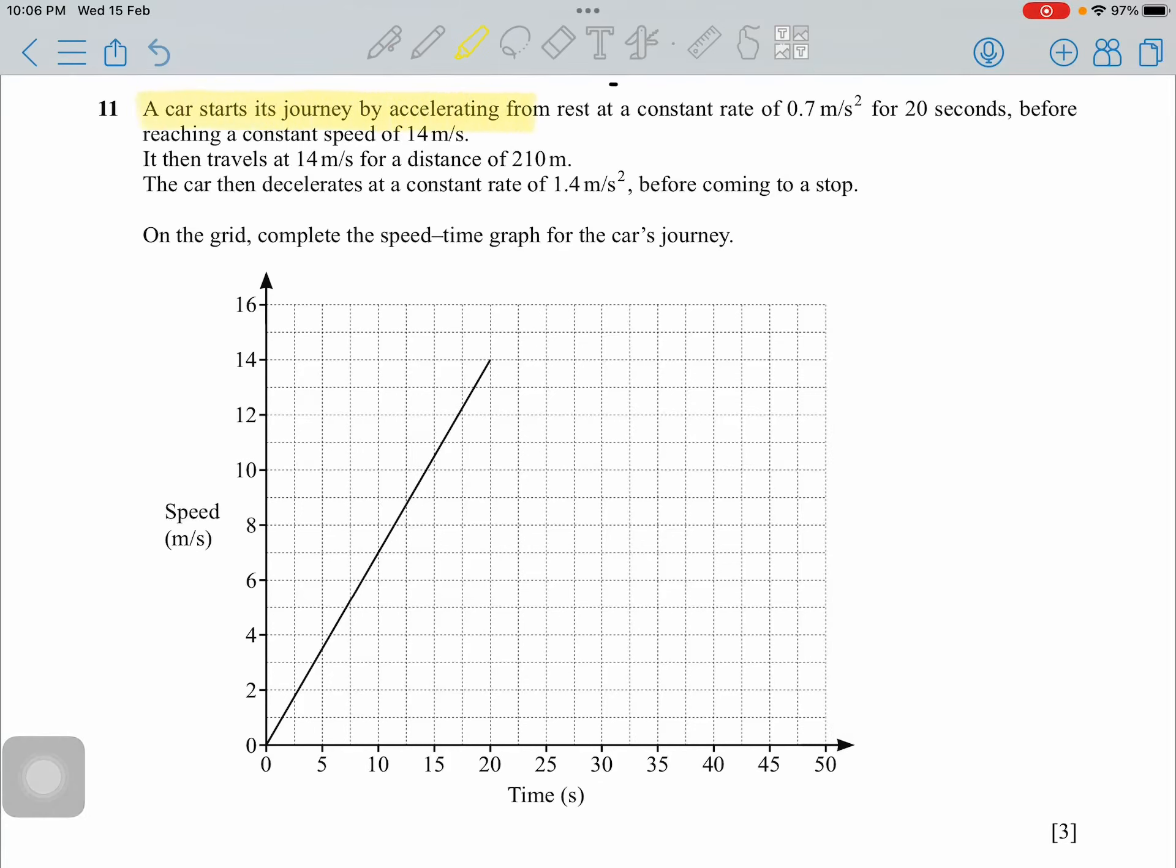A car starts its journey by accelerating from rest at a constant rate of 0.7 meter per second squared for 20 seconds before reaching a constant speed of 14 meter per second.